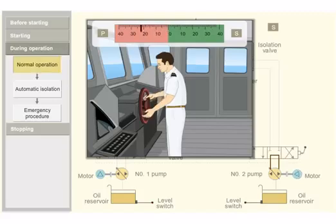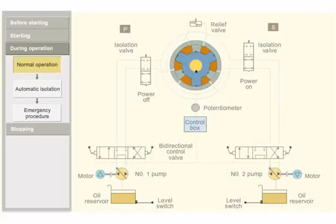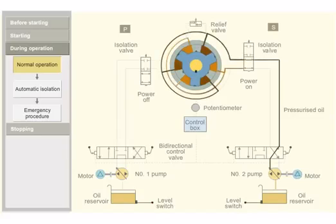When port order is given from the bridge, the bi-directional control valve moves to the left. Pressurized oil is pumped into rotor. Pressurized oil moves the rotor vanes. The rotor in turn moves the rudder stock to port side. The return oil flows back to the pump return side.